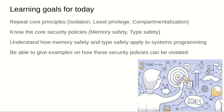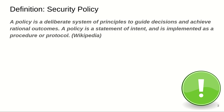It's always essential to know the basic policies well to understand what can actually happen if you violate them. In this class we will learn how memory safety and type safety apply to systems programming, and give examples of how these security policies can be violated. A policy is a deliberate system of principles to guide decisions and achieve rational outcomes — a statement of intent implemented as a procedure or protocol.